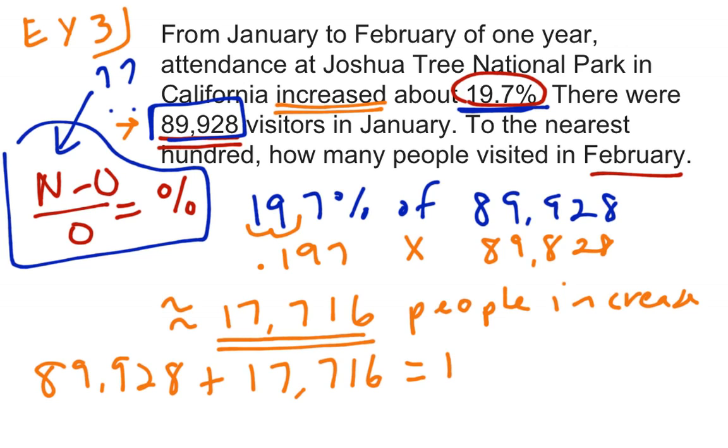And that number is 107,644, but in my problem it asked me to round to the nearest hundred. So that's the hundredths place is right there, and it's a six, the number right after it's a four. So I'm going to round down to 600. 100,600 is my answer.